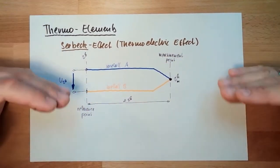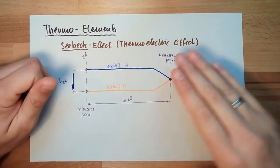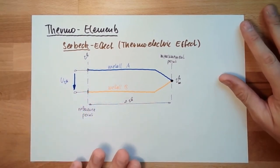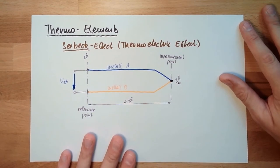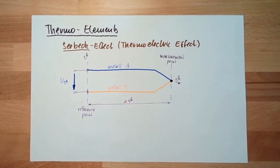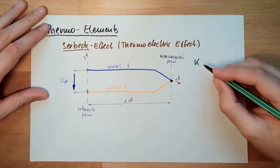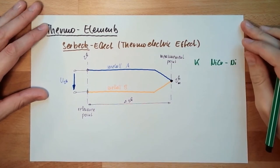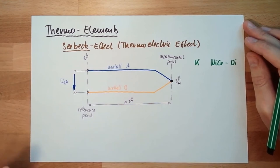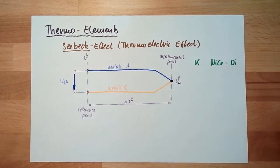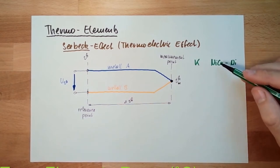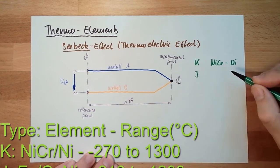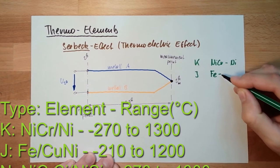In thermoelements, a lot of things are important. There are several types defined. The most commonly used type is type K - nickel-chrome-nickel. It's defined from minus 270 to up to 1300 degrees Celsius. Then there is type J - iron, copper-nickel.